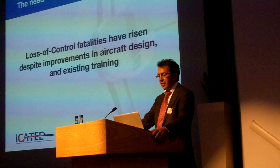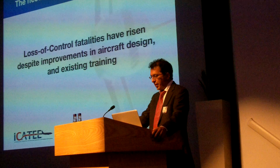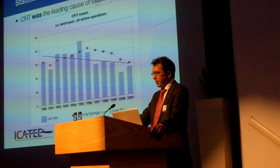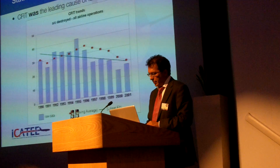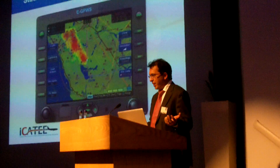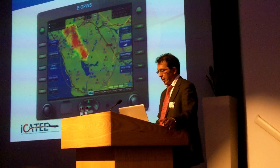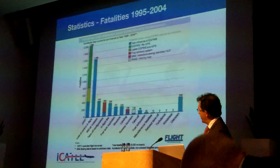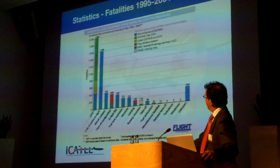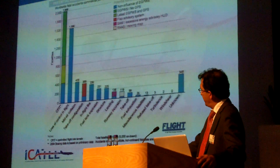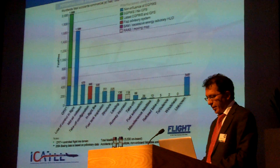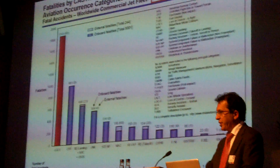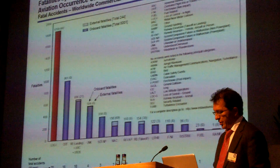Loss of control fatalities have risen despite improvements in aircraft design and existing training. Why? CFIT was in the past one of the big issues in aviation safety. There was a technical solution for CFIT that resolved many of the problems, and as we have seen with EGPWS, there's been a tremendous improvement in safety. Looking at fatalities and fatal accidents before EGPWS in the 1995-2004 period, you can see that after the introduction of that new technology, loss of control in flight became the number one cause of fatalities.